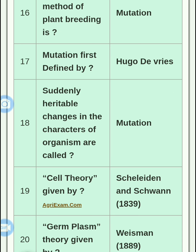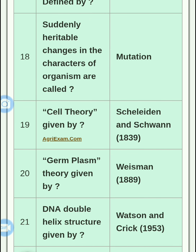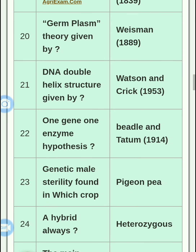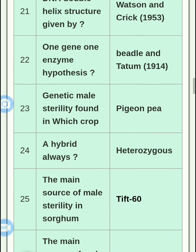The germplasm theory was given in 1889. The DNA double helix structure was given by Watson and Crick. Then, the one gene–one enzyme hypothesis means that one gene works for one enzyme; this hypothesis was given by Beadle and Tatum in 1941.